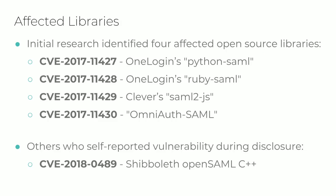The initial research identified four open source libraries affected: Python SAML, Ruby SAML, SAML2JS, and OmniAuth SAML. The last project was built using Ruby SAML, so the vulnerability had propagated into a completely different project. Throughout the disclosure process, additional projects self-reported being vulnerable, such as Shibboleth's OpenSAML C++. These are known vulnerable SAML libraries or dependencies, meaning the scope is likely larger than just these projects, because service providers or products reliant on vulnerable versions are likely affected. This also doesn't account for any one-off SAML implementations that may have recreated this vulnerability themselves.